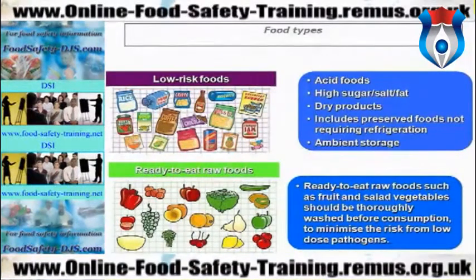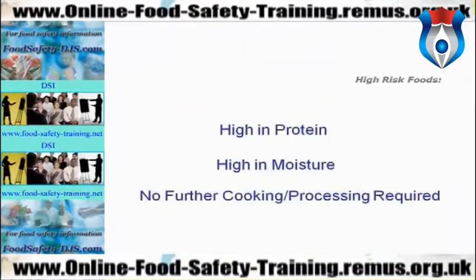Ready-to-eat raw foods such as fruit and salad vegetables should be thoroughly washed before consumption to minimize the risk from low-dose pathogens. High-risk foods will support the growth of pathogenic microorganisms. High-risk foods have certain properties: first of all they are high in protein — that's the building block of life — which bacteria also require.